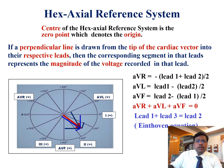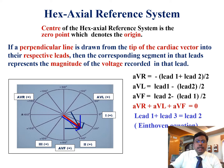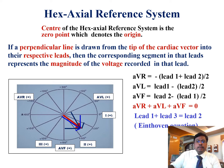In the x-axis reference system, the center point denotes the origin. In this diagram, the red arrow denotes a cardiac vector. If a perpendicular line is drawn from the tip of the cardiac vector into the respective leads, then the corresponding segment in the leads represents the magnitude of voltage recorded in the leads. Lead one, two, and three belong to bipolar limb leads, so the unipolar and bipolar limb leads can be related using these equations.